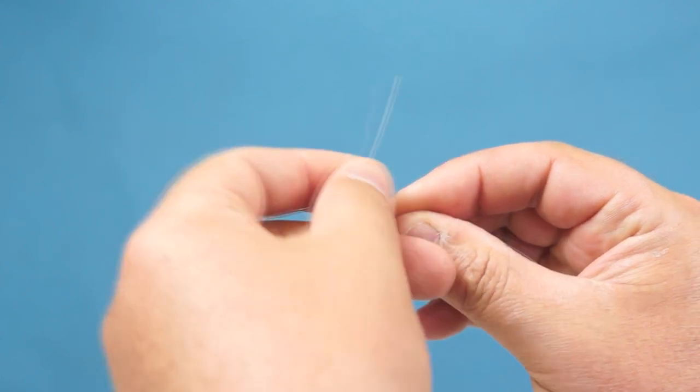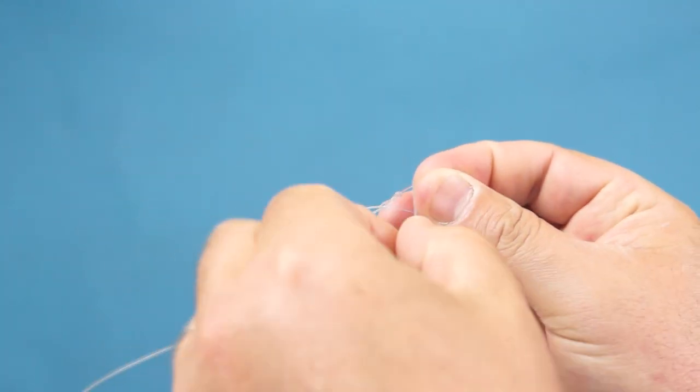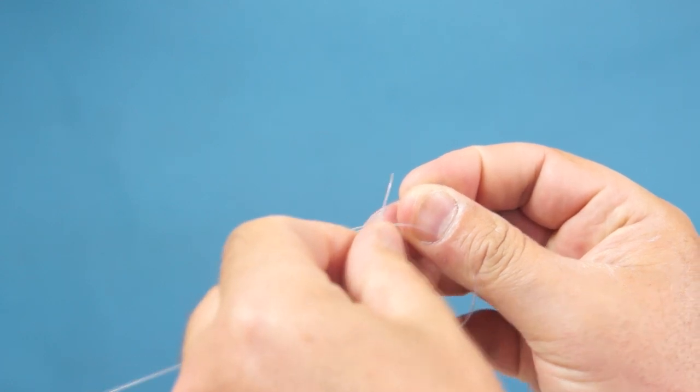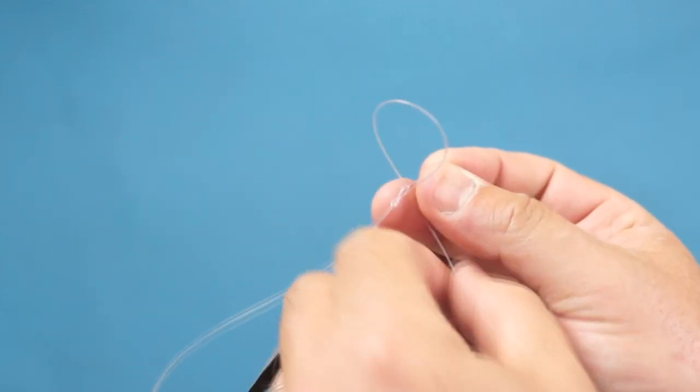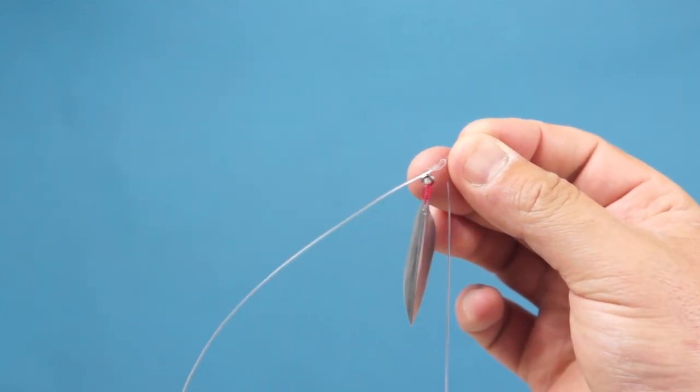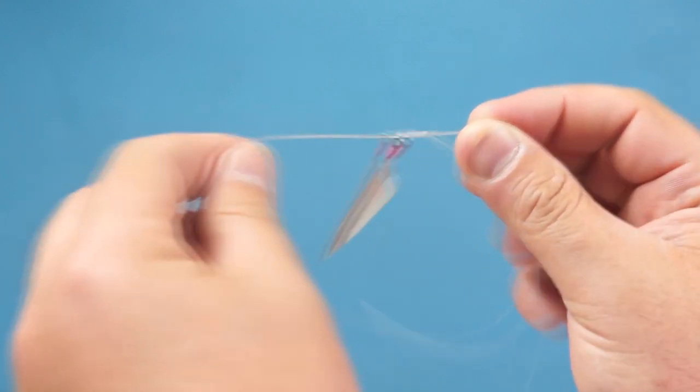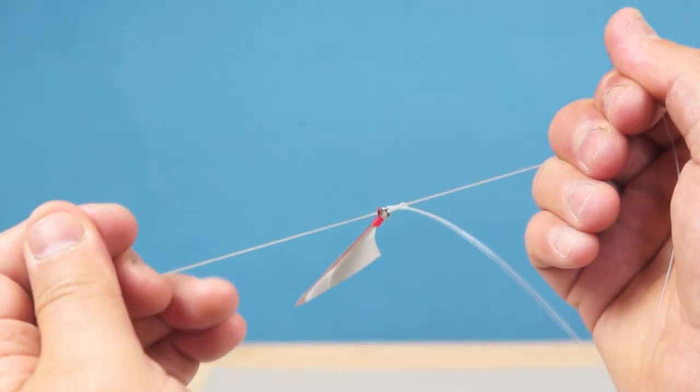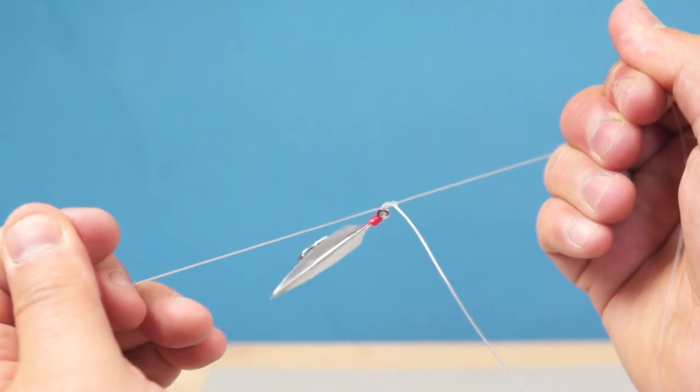I can then thread the line from one of the lures in through one eye and out through the other. And then pull the lure up to the rig line and the knot. By pulling either side of that knot I can then close it up a little tighter.